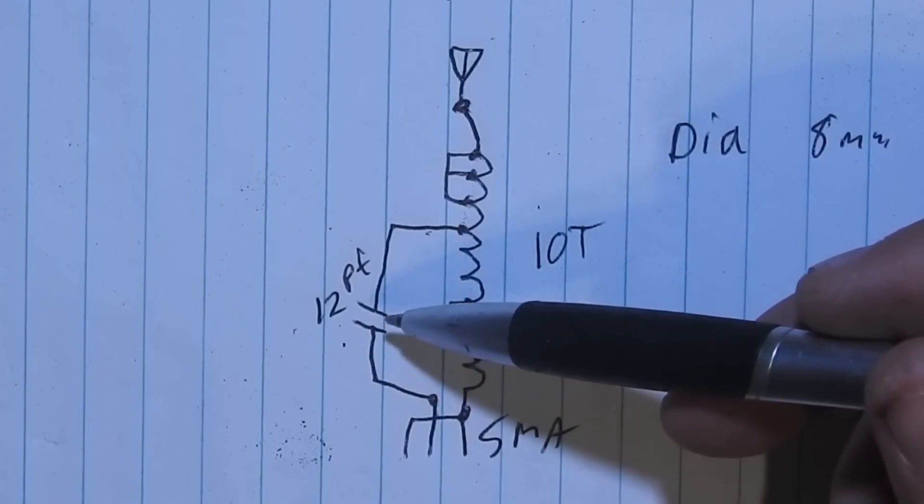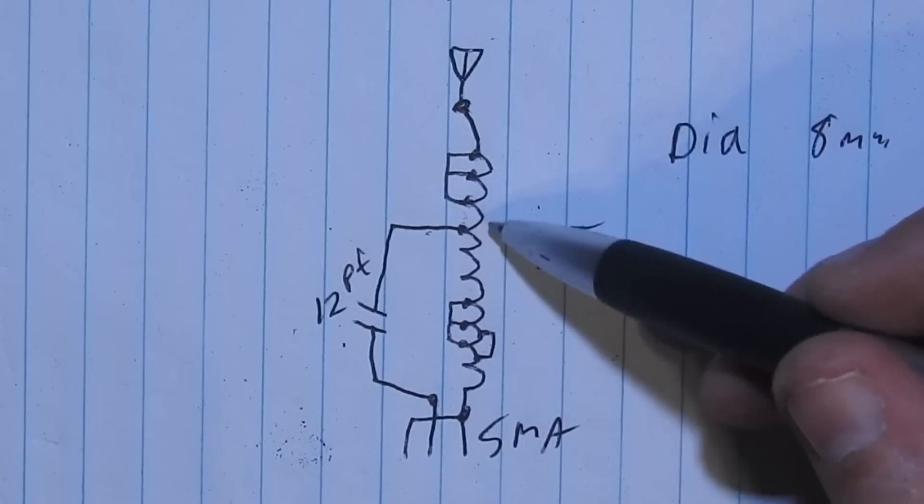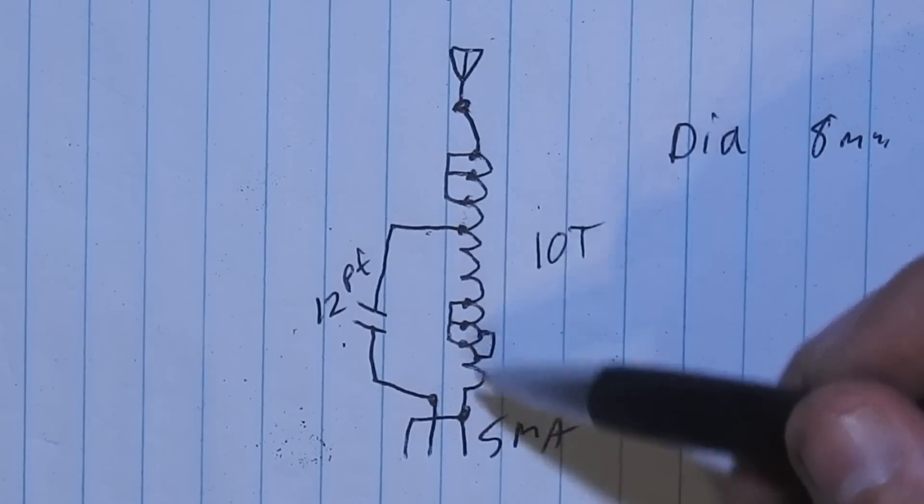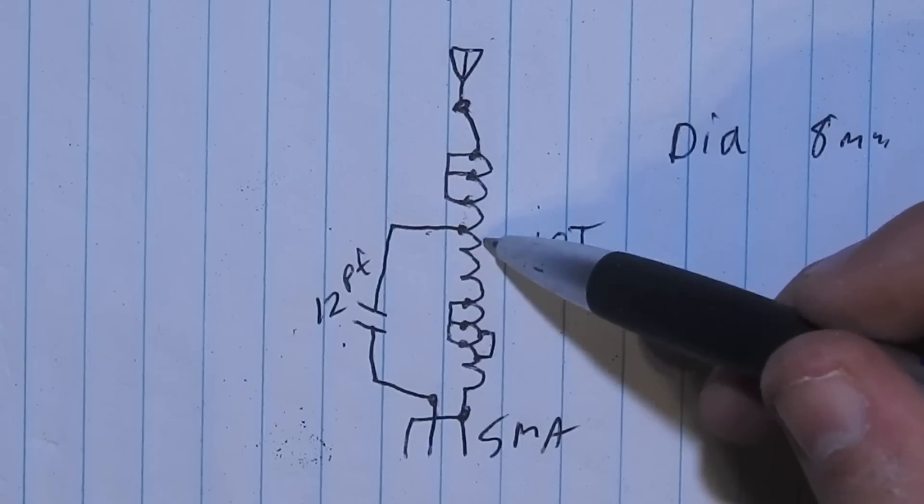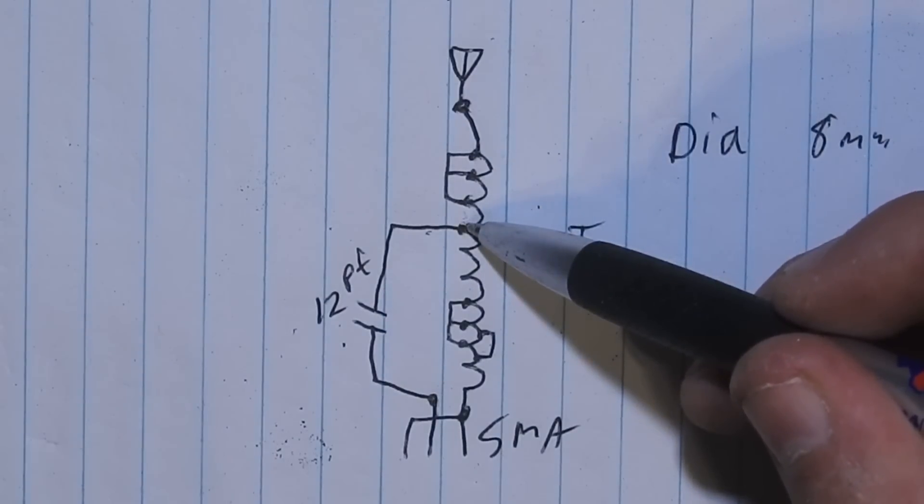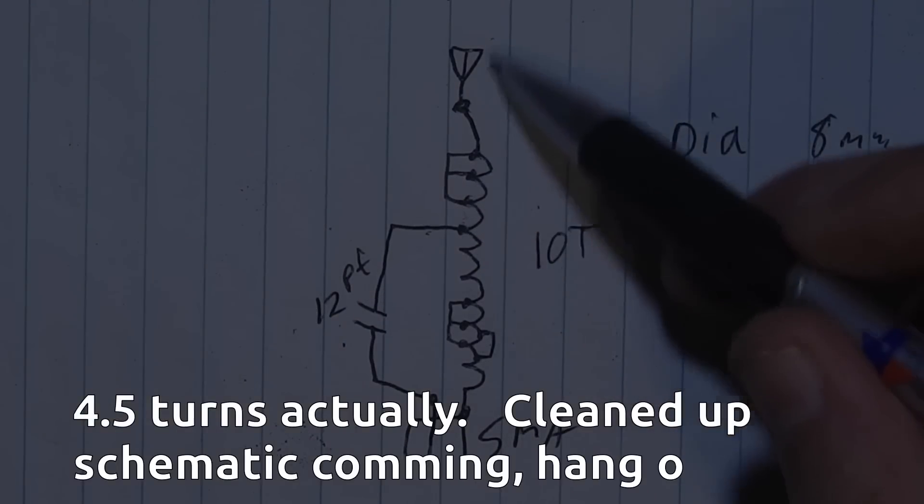Picofarad, picofarad, tomato, tomato, potato, potato. And comes up here, and it taps at what is essentially one, two, three, four turns up the coil. And then there's one turn above the capacitor before we get to the antenna.